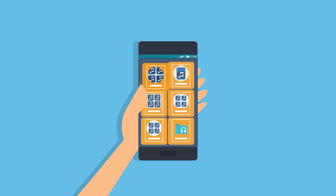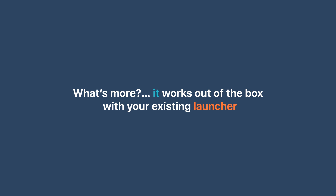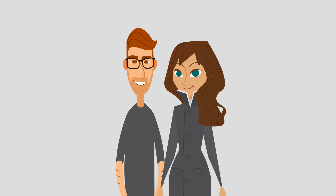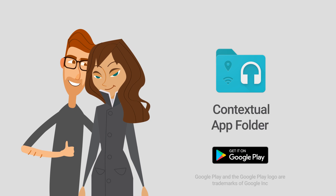Different styles and color options to match your style. What's more, it works out of the box with your existing launcher. So what are you waiting for? Contextual App Folder is available on Google Play for free — go ahead and download it right now.